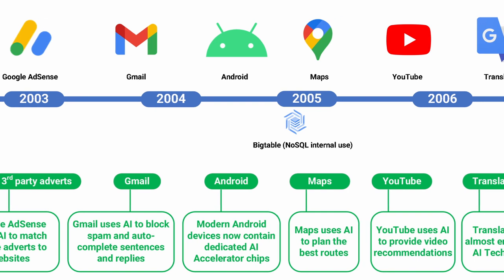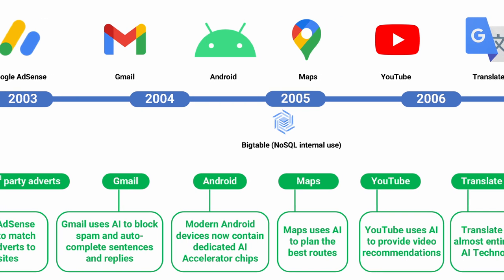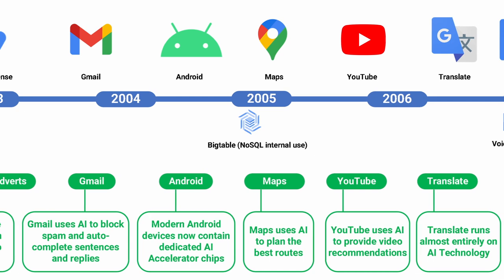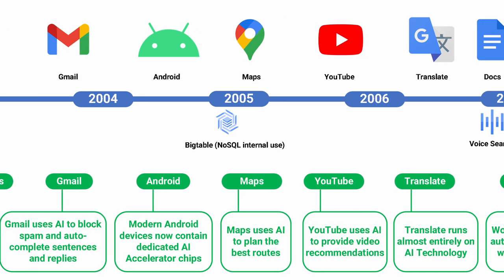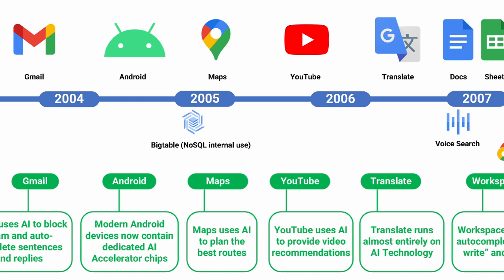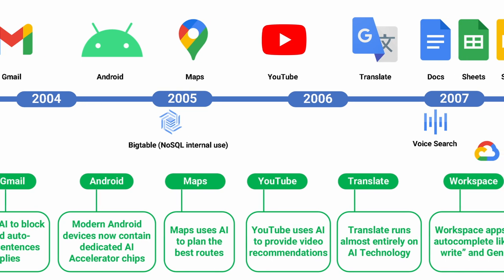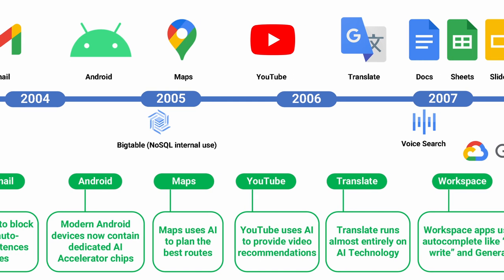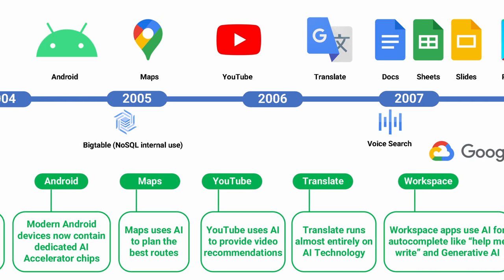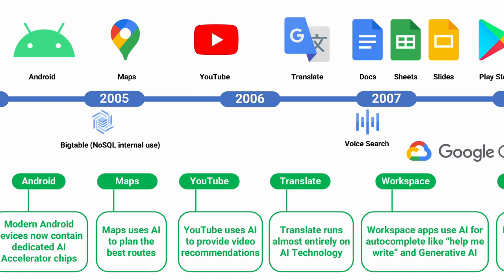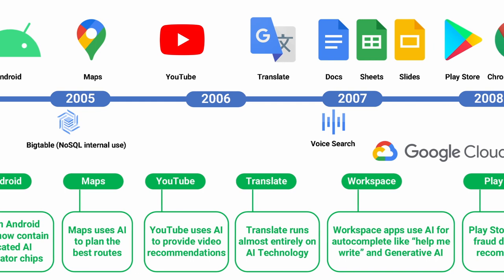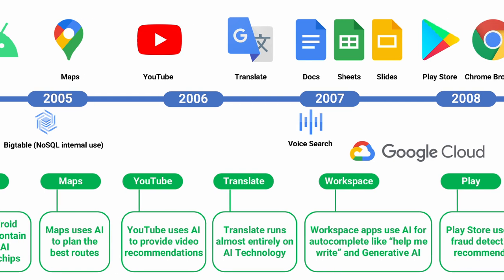Modern Android devices now contain dedicated AI accelerator chips and can use them for things like photo editing. You may have seen Magic Eraser, which can remove, move or replace sections of images. Google Maps also uses AI to plan the best routes, and YouTube uses AI to provide video recommendations based on what people have watched previously.